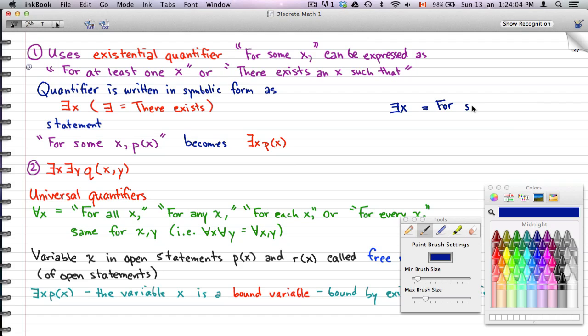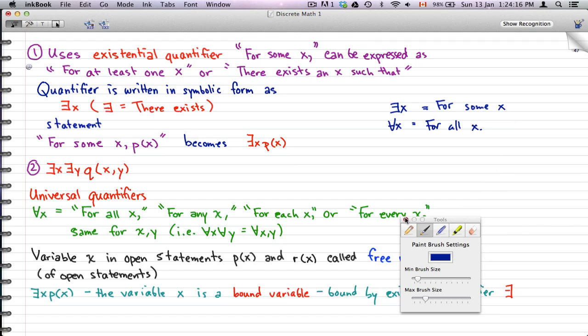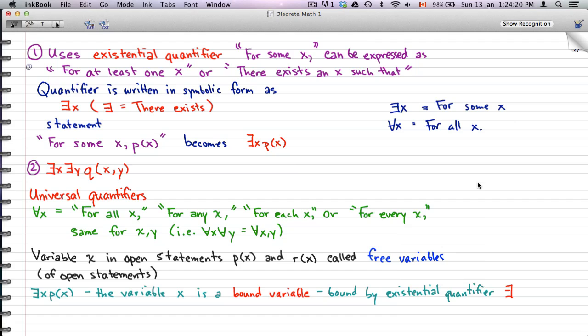...'for some x in the universe.' For ∀x, it means 'for all x in the universe.' That's the difference between ∃x and ∀x. I cannot describe it more clearly than that.